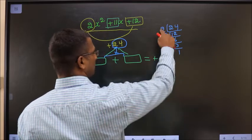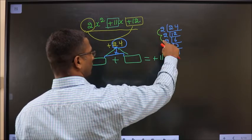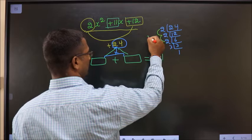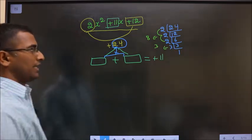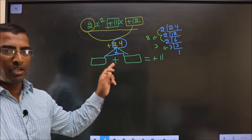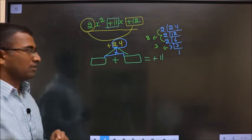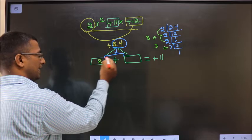So the 2 numbers are 2 into 2 is 4, 4 into 2 is 8, and the second number is 3. 8 into 3 is 24, 8 plus 3 is 11. So write the 2 numbers 8 and 3.